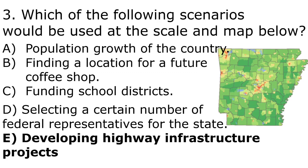Finding a location for a future coffee shop would require an even larger scale, maybe at a county level. Funding of school districts requires age data, which we're not told about. Selecting representatives is determined by population of the whole state, not by area. That leaves E — developing highway infrastructure projects — since planners want to build highways reaching populated areas like central and northwest Arkansas, and fewer highways in less-populated areas like southern Arkansas.